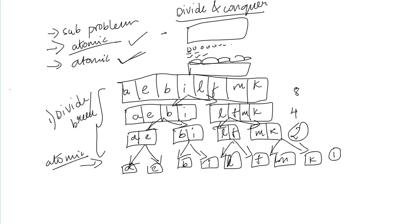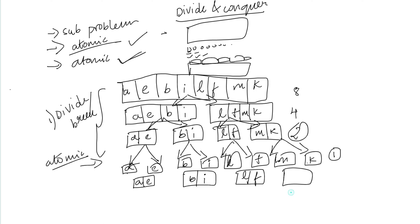At the atomic level, we sort each pair: A and E, then B and I, then L and F, then M and K. For example, M and K — K comes first, so the sorted pair is K, M.